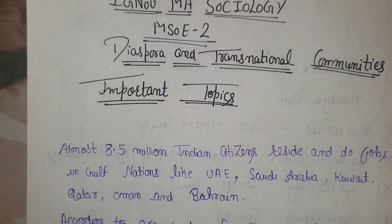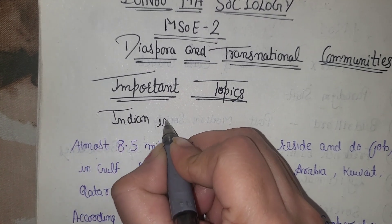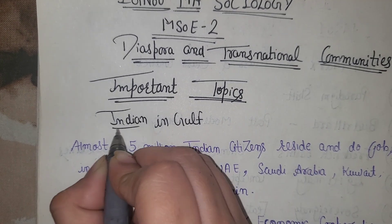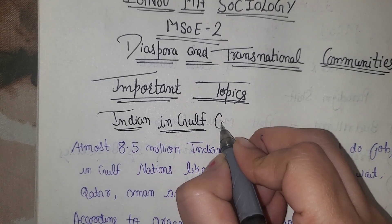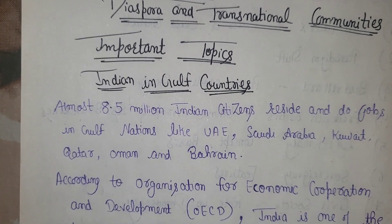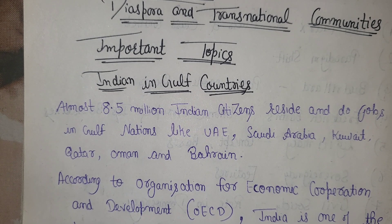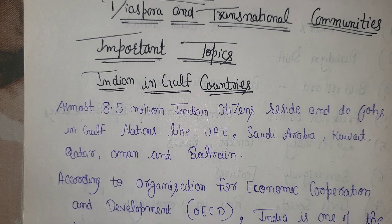This topic is Indians in the Gulf region, which you have seen in the diaspora subject. Different countries like Arabian Peninsula, Europe, and many different places — Indians have migrated. If you have a question on the Gulf region, you will write an introduction, then factors leading to migration, then challenges — what problems Indians face in the Gulf region.